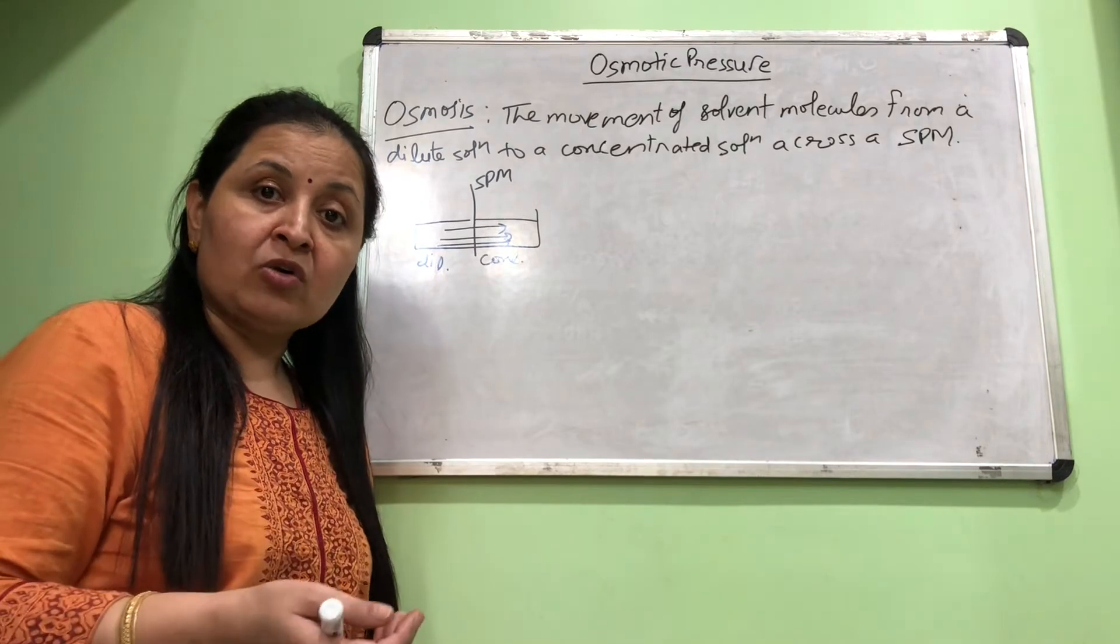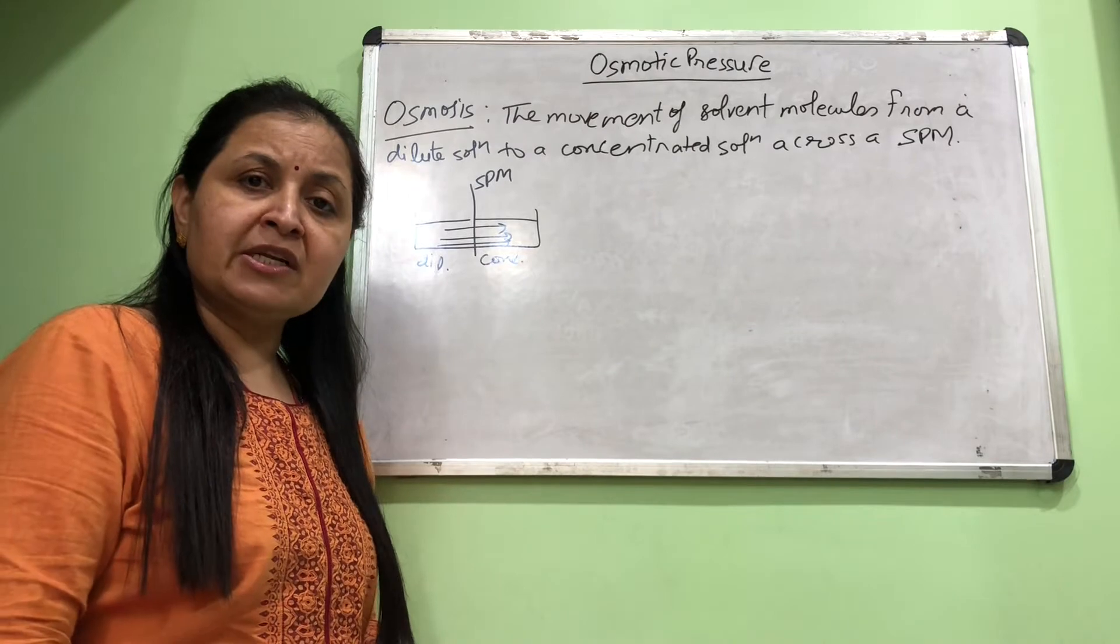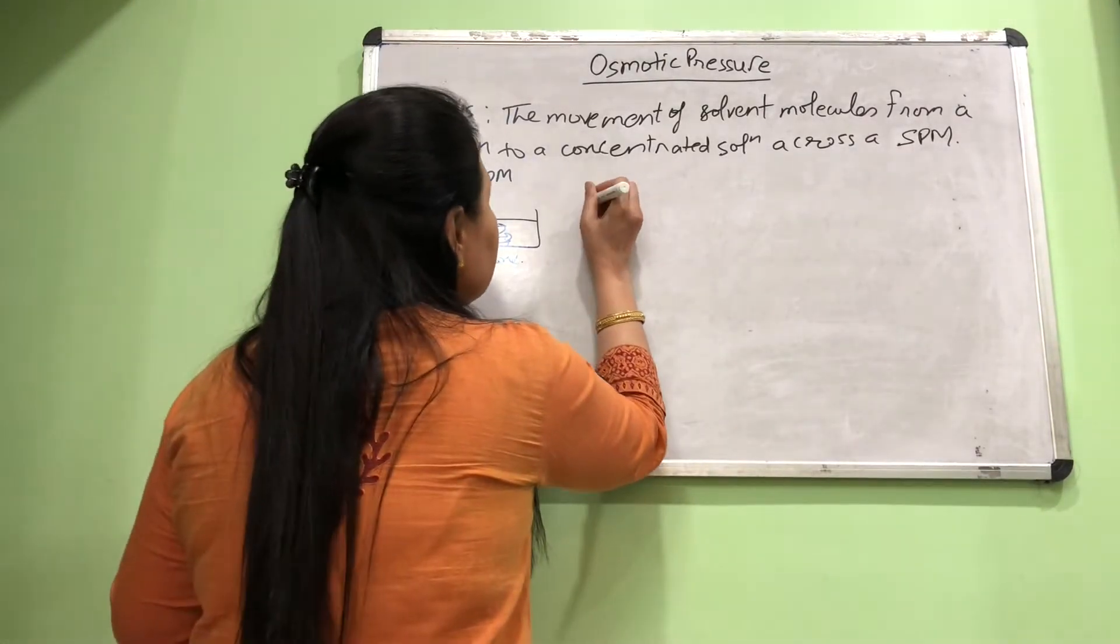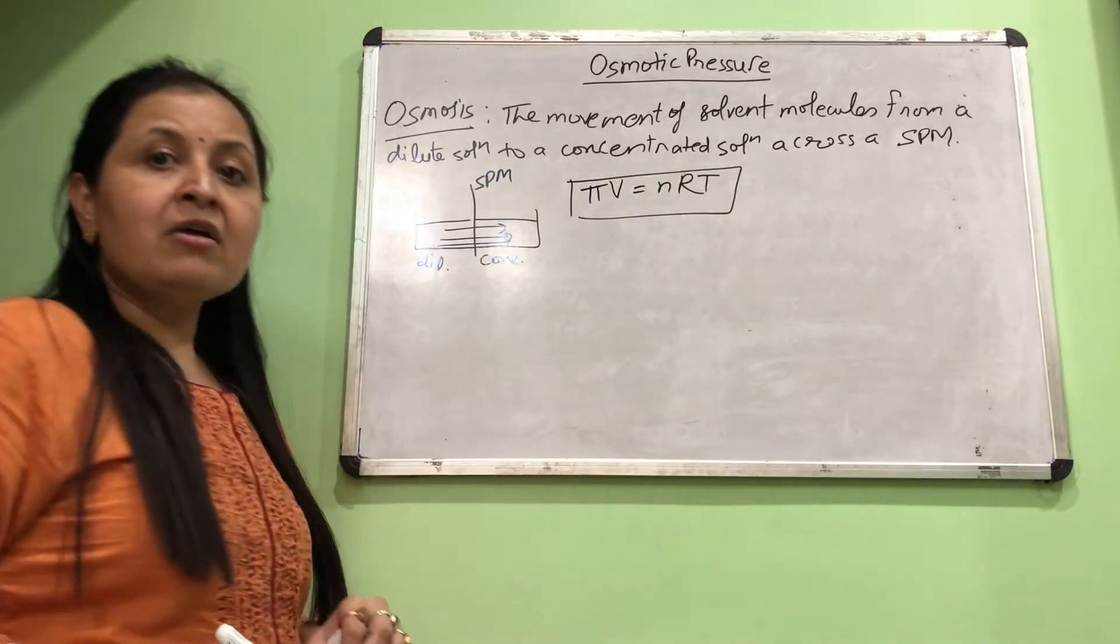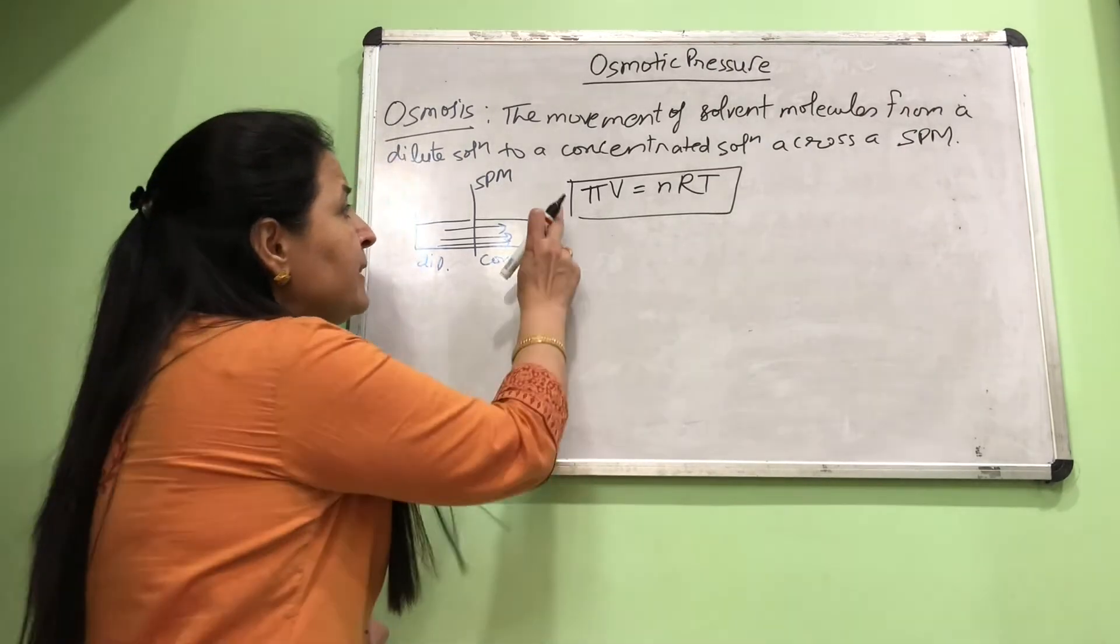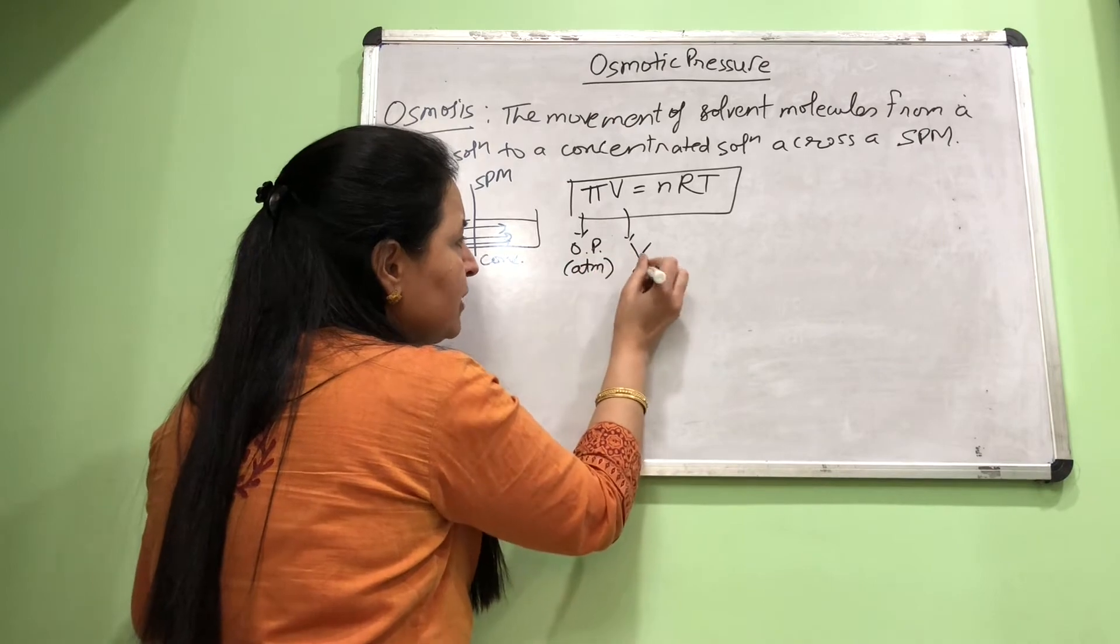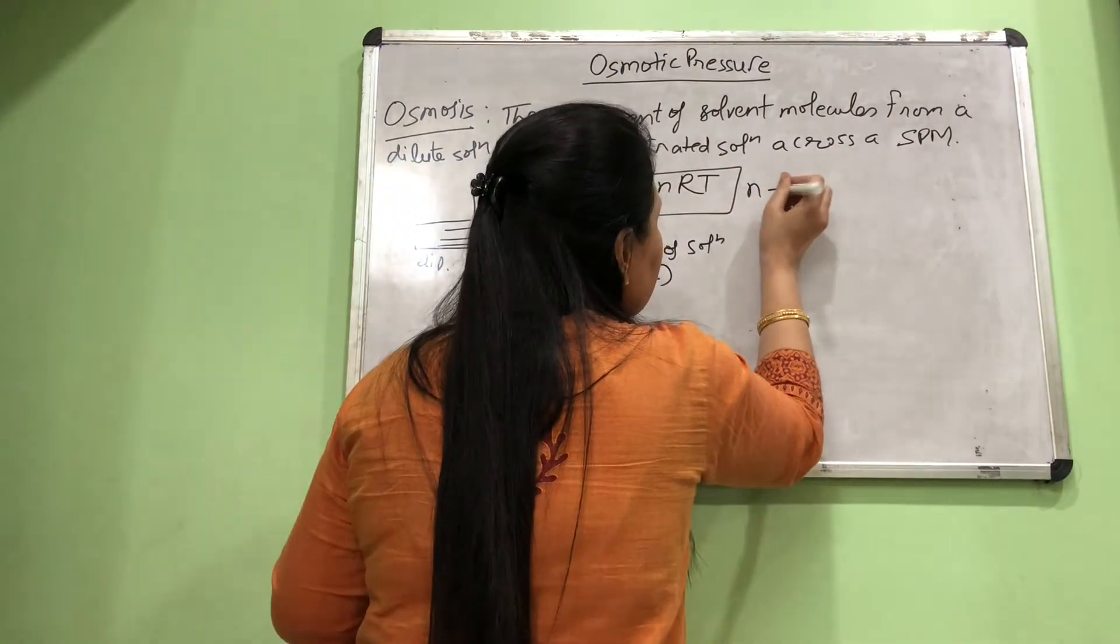Being a pressure quantity, its units are the same as the units of pressure, most commonly expressed in atmosphere, pascal, etc. In your 12th class, it is mostly given in atmospheres. The important formula we need to use here is πV = nRT. This is your osmotic pressure colligative property formula. Let us know the meaning of each term here.